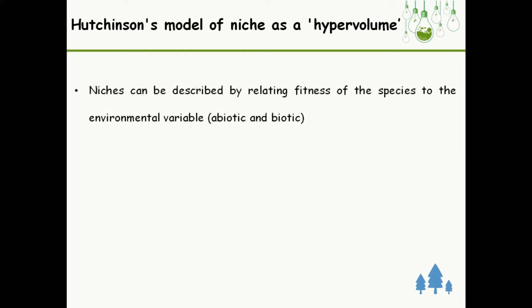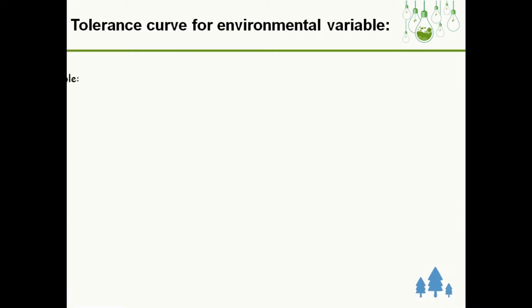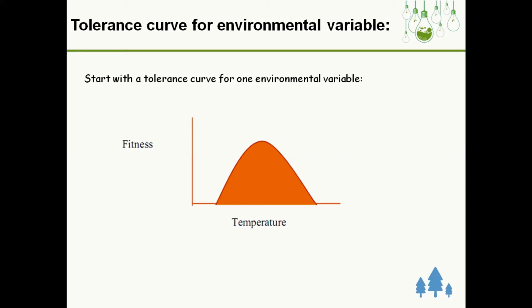Niche can be described by relating fitness of the species to environmental variables by the help of species tolerance range. Tolerance is the organism's capacity to survive variation in environmental conditions which ultimately influences its distribution. If we start with a single factor, for example temperature, we can see under optimal set of temperature the fitness is highest.